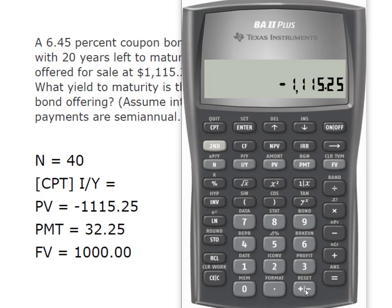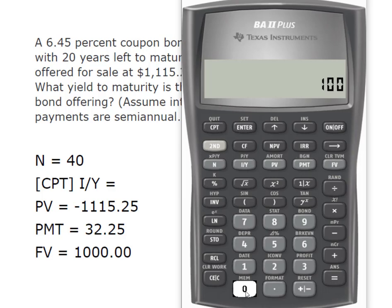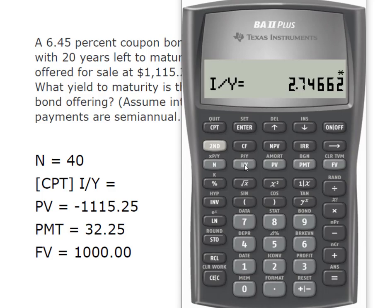Our payment we calculated to be $32.25, and we know that the future value of that bond is $1,000. And now we're going to compute IY.